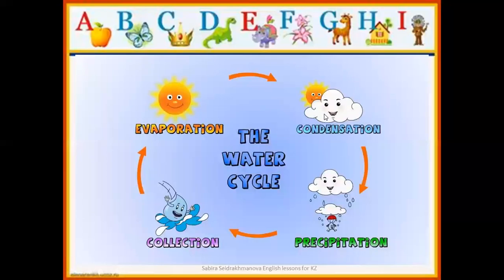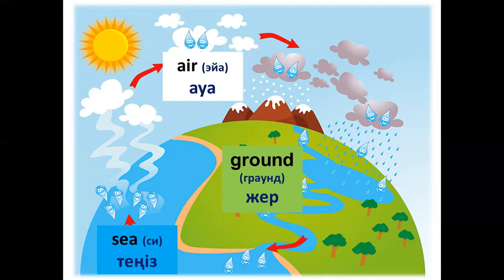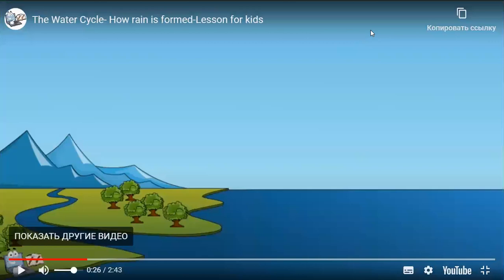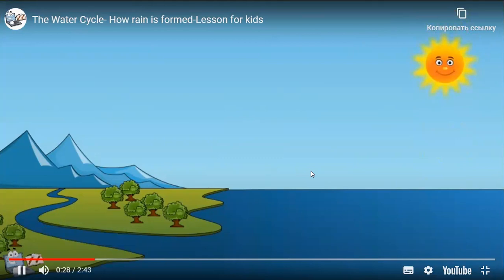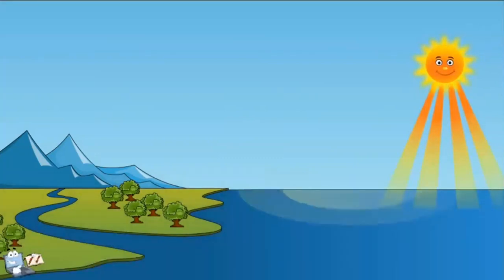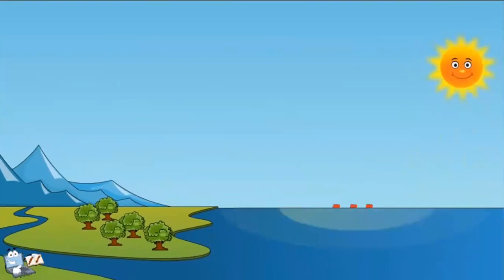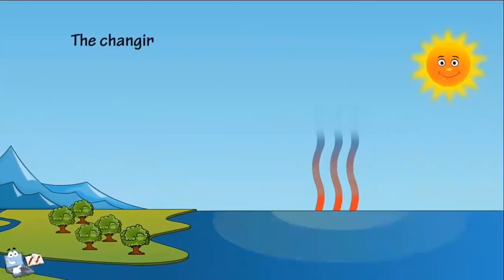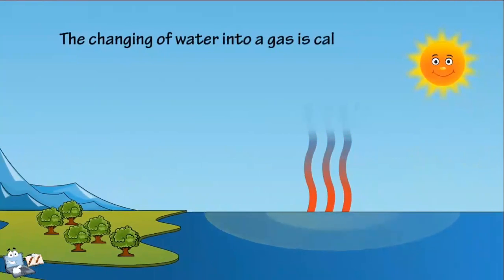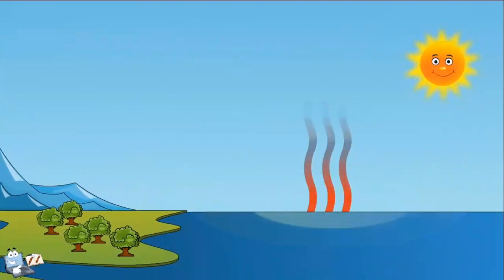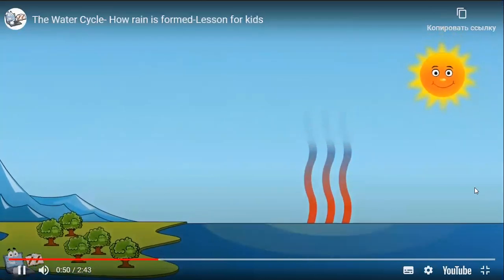Let's look at these words from this and the previous slide, then watch the video to understand. Watch the video, please. Here is the sun. When the sun shines, the heat of the sun warms the water, turning it into an invisible gas called water vapor. This process — the changing of water into a gas — is called evaporation. Because gas is lighter than liquids, water vapor rises up into the sky and moves further up away from Earth's surface due to the temperature of gas.